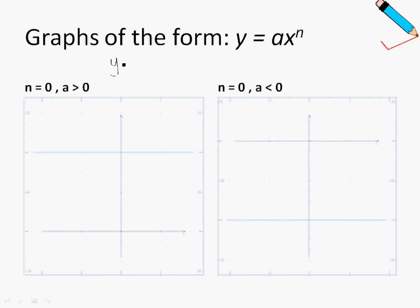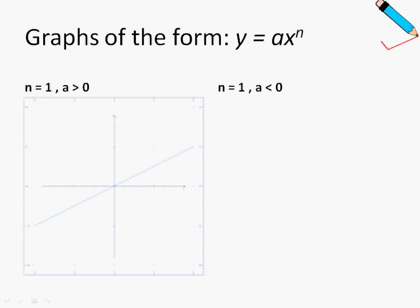For a tangible example with n=0: y equals 1 times x to the power of 0 is just 1, so the graph cuts the y-axis at 1. When a is negative 1, y equals negative 1 times x to the power of 0 is just negative 1, so the graph cuts the y-axis at negative 1. When n is 1 and a is positive, the graph will look like this, and when a becomes negative, the graph reflects along the x-axis.